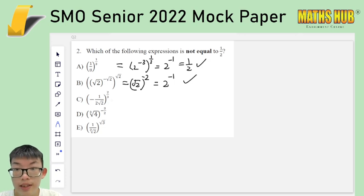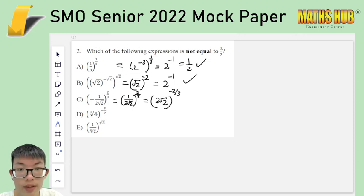For C, perhaps we can first say that the negative doesn't matter because the 2 is even. So you're going to have square of that, so it can be ignored. And then I can write this as 2 root 2 to the power of negative 2 thirds. And 2 root 2 is square root of 8. So this is 8 to the power of half times negative 2 thirds, which is going to be 8 to the negative 1 third. And this is also equal to half because the cube root of 8 is 2. So this is also correct.